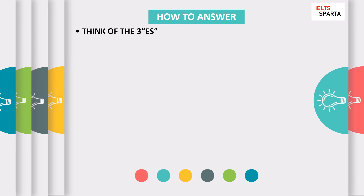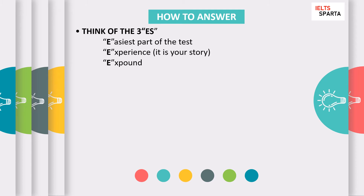IELTS speaking part one is the easiest part of the test. To practice, think of the three E's. The first E is that it is the easiest part — the questions are all very familiar to you. They ask about people you know, objects you have, your house, your hometown, and your job. The second E is that all questions are based on your experiences — it is your story, what you know.